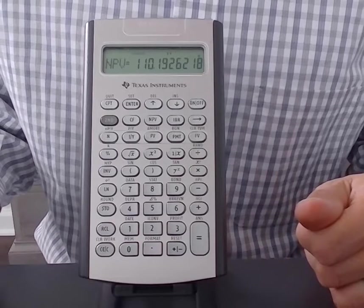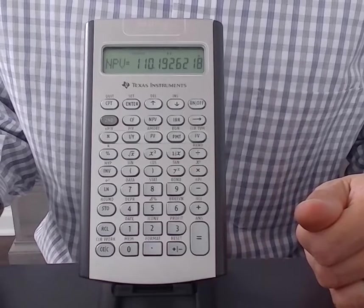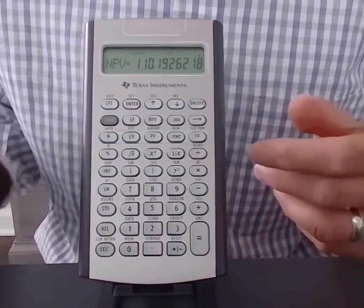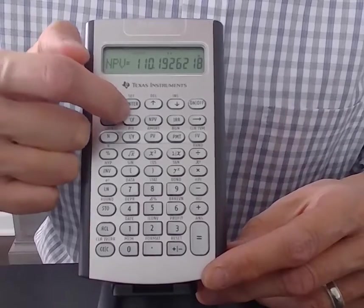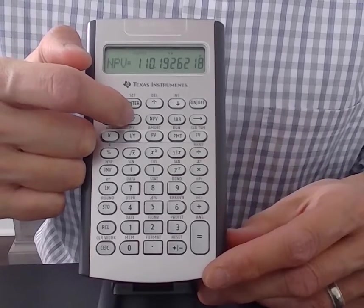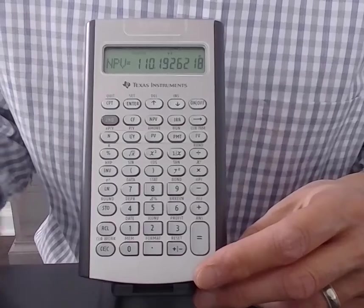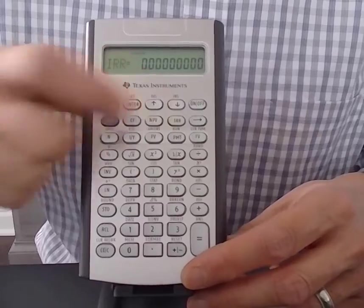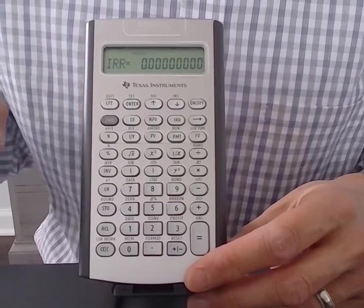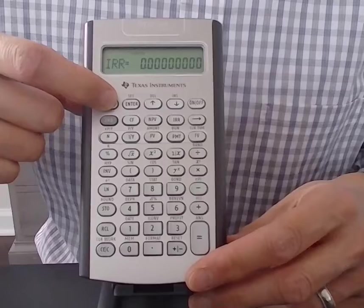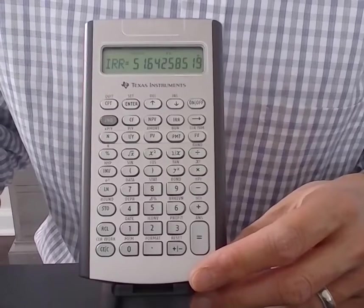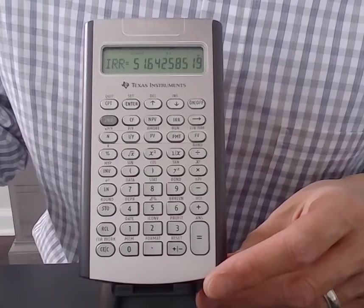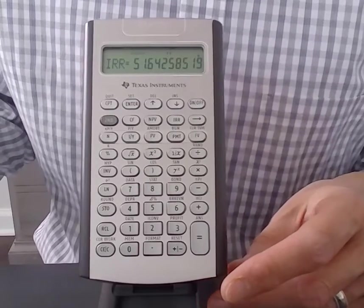Now, lastly, I want to calculate the internal rate of return of a cash flow stream. Now, the nice thing about this calculator is that these cash flows are stored here in the cash flow register. So I don't need to re-enter the numbers. If I wanted to get the internal rate of return of the same cash flows, all I have to do is go over and press the IRR button. And I have to press the compute. And it tells me that the IRR of this problem is 51.64%.